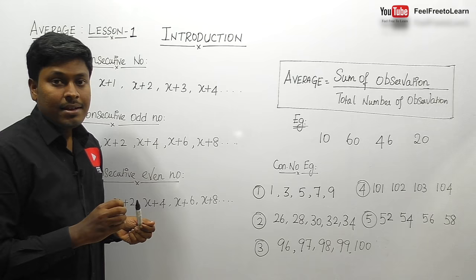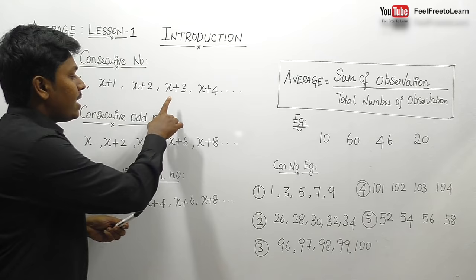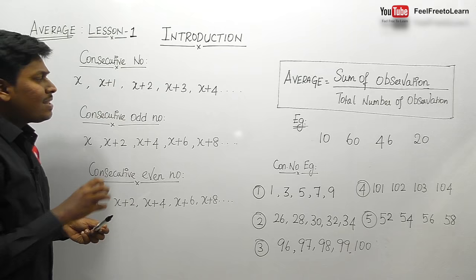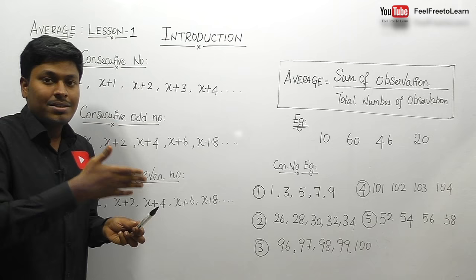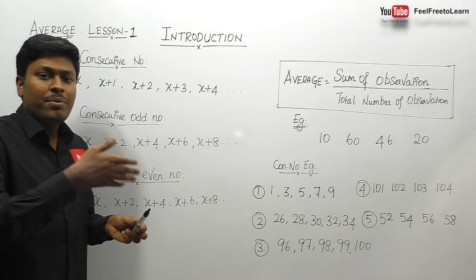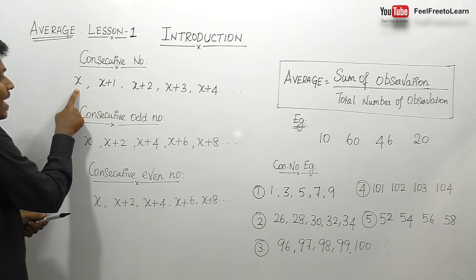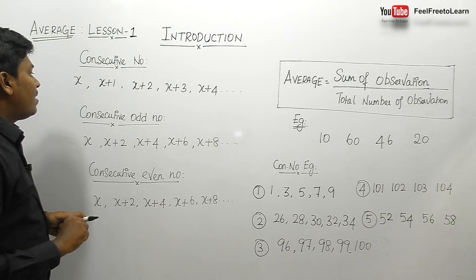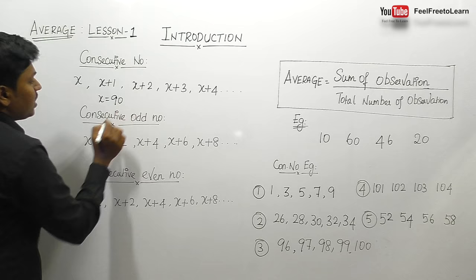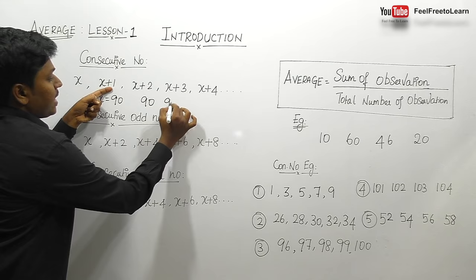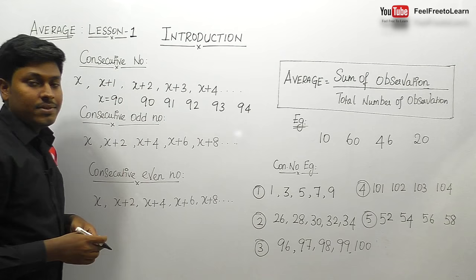For some cases, without using the formula or adding the numbers, by just looking at the number itself we can directly say the average — but the numbers should fall into one of certain categories. For example, consecutive numbers: 91, 92, 93, 94, 95 are consecutive numbers. The consecutive numbers formula is x, x+1, x+2, x+3, x+4, and so on. If we substitute x equals 90, we get 90, 91, 92, 93, and 94.